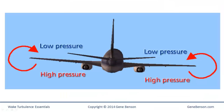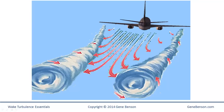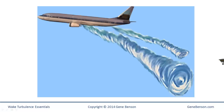Wake turbulence is generated when high pressure air beneath the wing spills out at the wing tip and rushes to fill in the low pressure area on top of the wing. Remember that the wake is found below, behind, and downwind of the generating airplane. An encounter with the wake of a large airplane or helicopter by a small general aviation airplane will most likely be unrecoverable if it occurs at or near traffic pattern altitude.